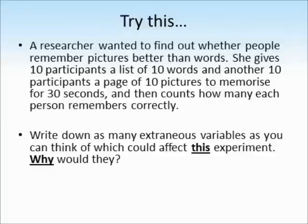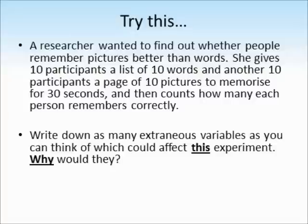Let's see if you've got the hang of identifying extraneous variables using the same research scenario as before. A really crucial exam skill is being able to fully explain your point. For example: the participant's first language could be an extraneous variable, because if a participant in the word condition speaks English as a second language, they may struggle to remember as many words, which could lower the mean result of the word condition and give a false result. Pause the video and write down as many extraneous variables as you can think of for this experiment, explaining why each would be an extraneous variable.